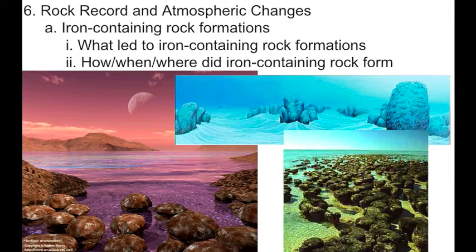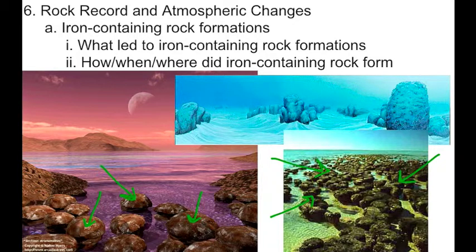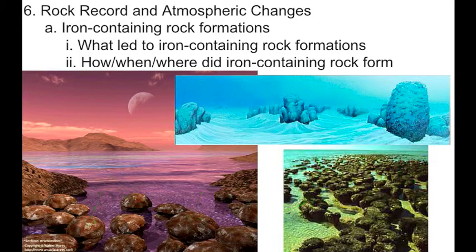Believe it or not, in this picture here to the left, these are actually rocks that are the product of colonies of stromatolites — basically ancient photosynthetic colonies of algae, and they are highly successful. They are still around today; we can still find stromatolites successfully living.